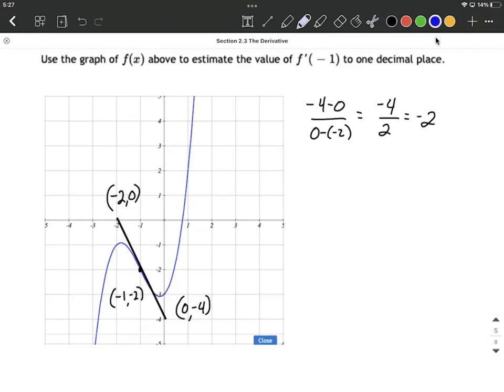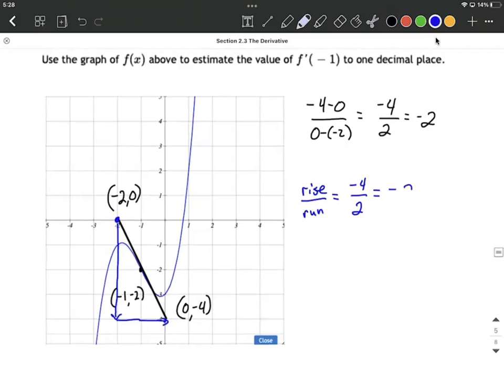Another way you could visualize this is think rise over run. Let's say we started with this uppermost point on my line, the negative 2, 0. Rise over run, you can make this into a counting problem, where we count down 1, 2, 3, 4. So down 4 would correspond with negative 4, and to the right 1, 2, which would correspond with positive 2. A little bit of simplifying down, and we get to that exact same slope, negative 2.